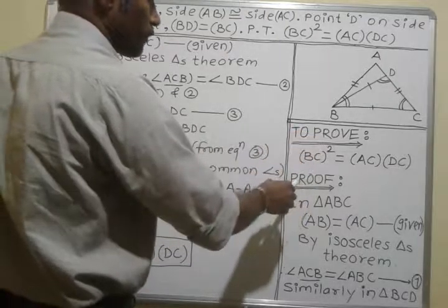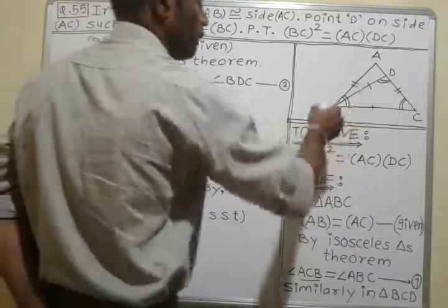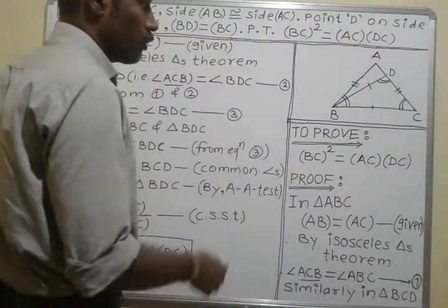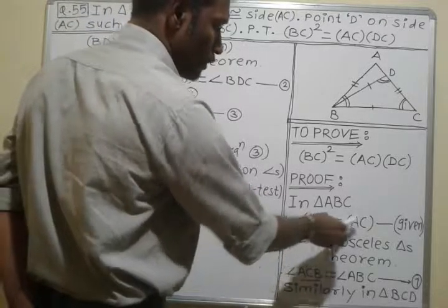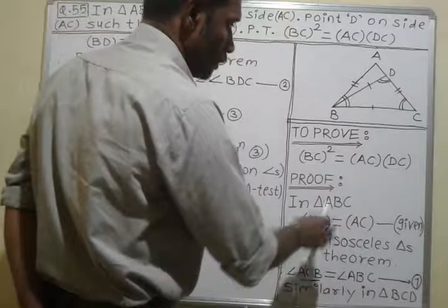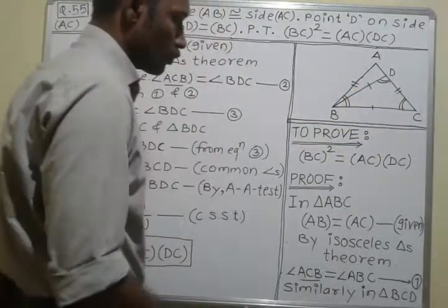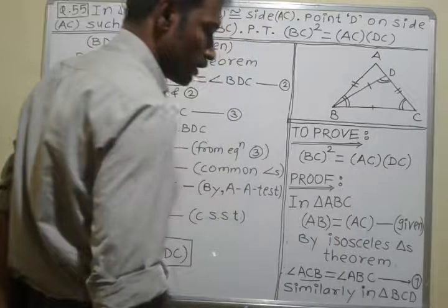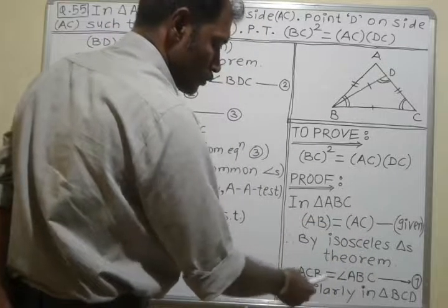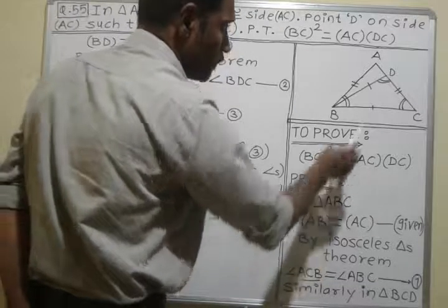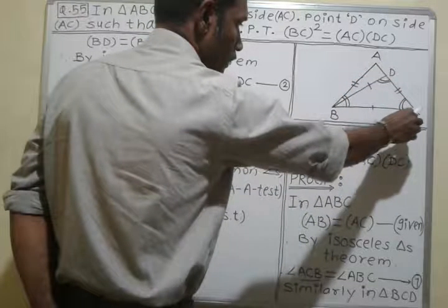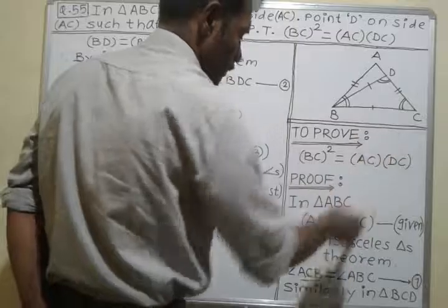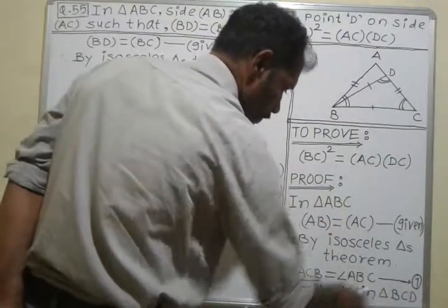For the proof, in triangle ABC we are given AB is equal to AC — this is given. Now in any triangle, if two sides are congruent, then the opposite angles are congruent. Therefore, by the isosceles triangle theorem, the angle opposite to side AB, that is angle ACB, is equal to the angle opposite to side AC, that is angle ABC. This is equation number 1.